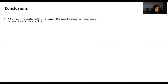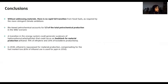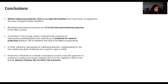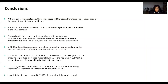Conclusions: without addressing materials, there is no rapid full transition from fossil fuels as required by more stringent climate ambitions. Bio-based petrochemicals account for one-third of total petrochemical production. A transition in the energy system — for example, electrification of urban mobility — could generate surpluses serving as feedstock for material production. By 2030, ethanol is repurposed for material production, compensating for the fuel market loss. The biomass trilemma did not affect land-use change emissions. The emergence of biorefineries led to a reduction of petroleum refining utilization rates, resulting in a reduction of 180 megatons of CO2 in 2050. One uncertainty is the assumed constant oil price of $50 per barrel throughout the whole period.